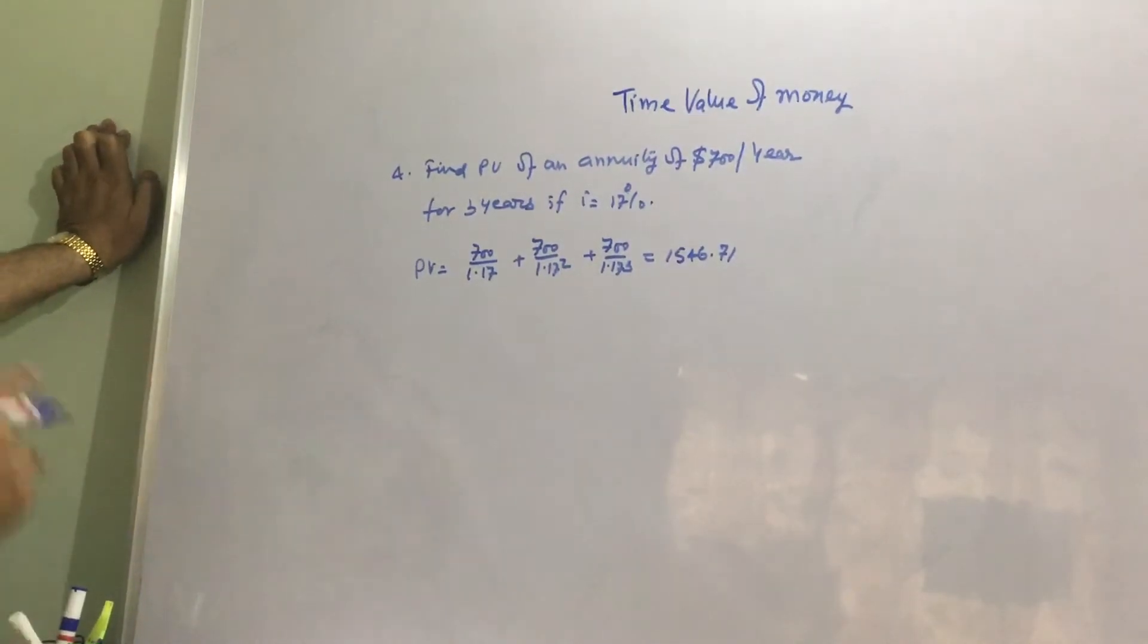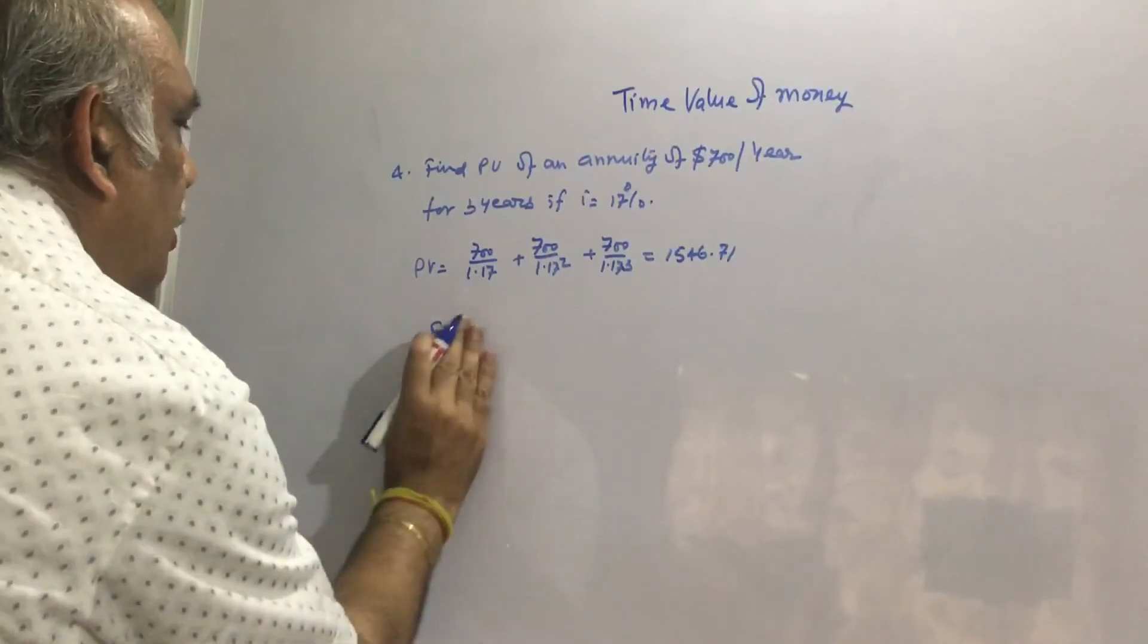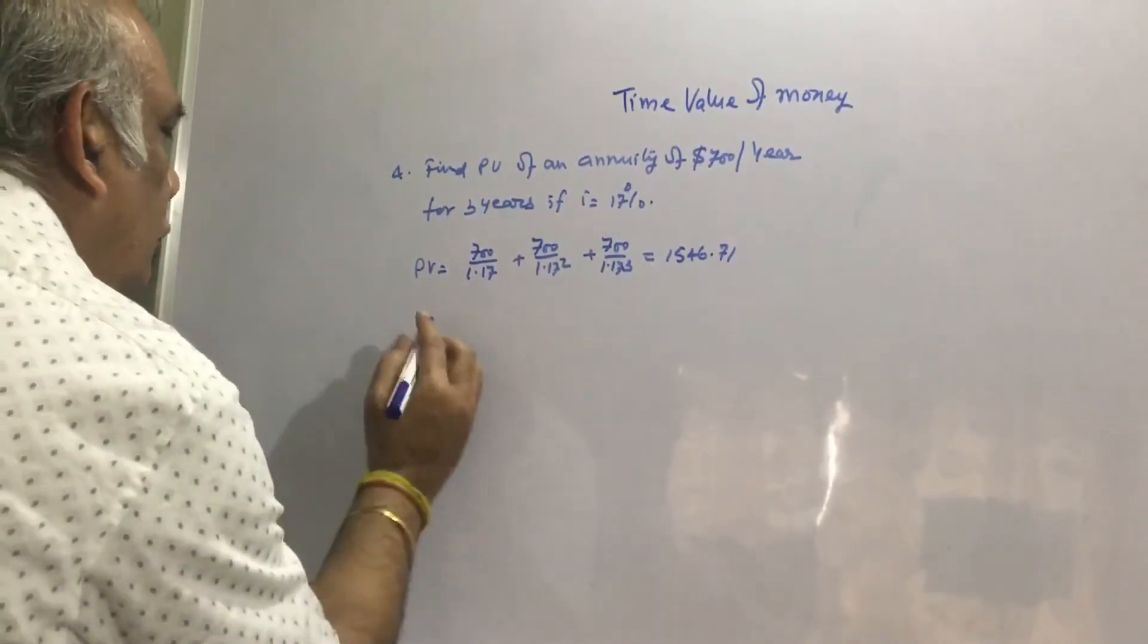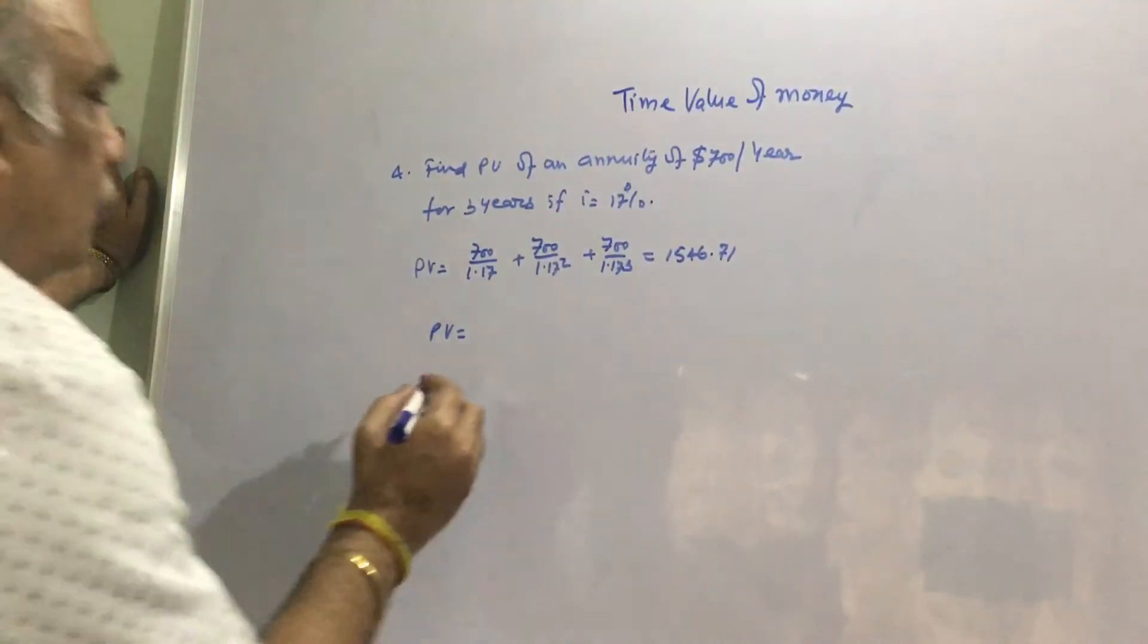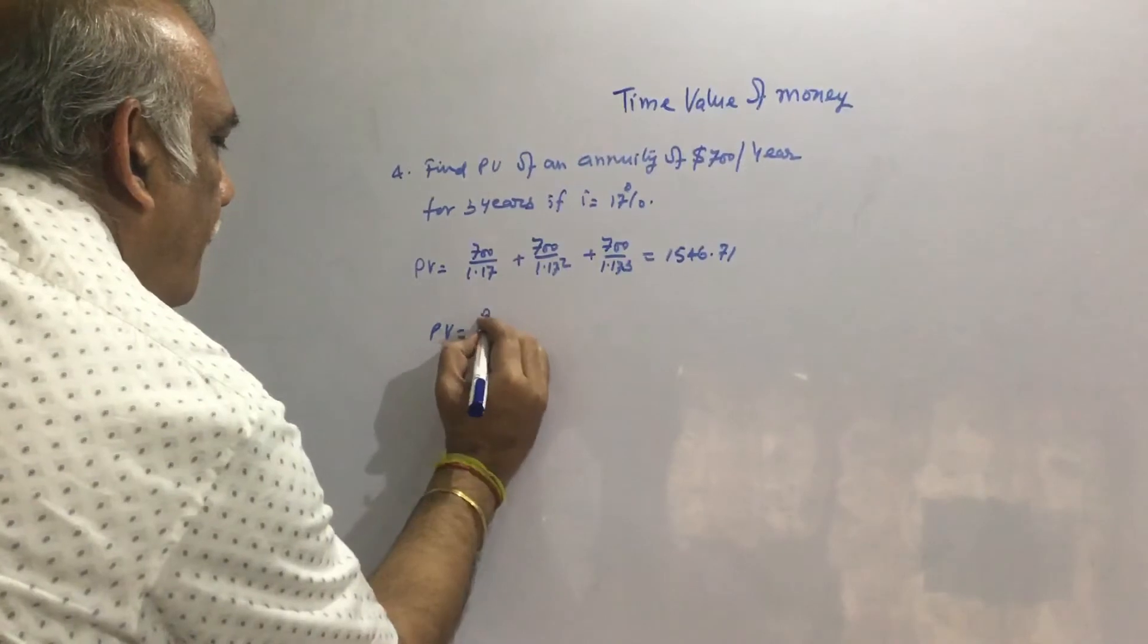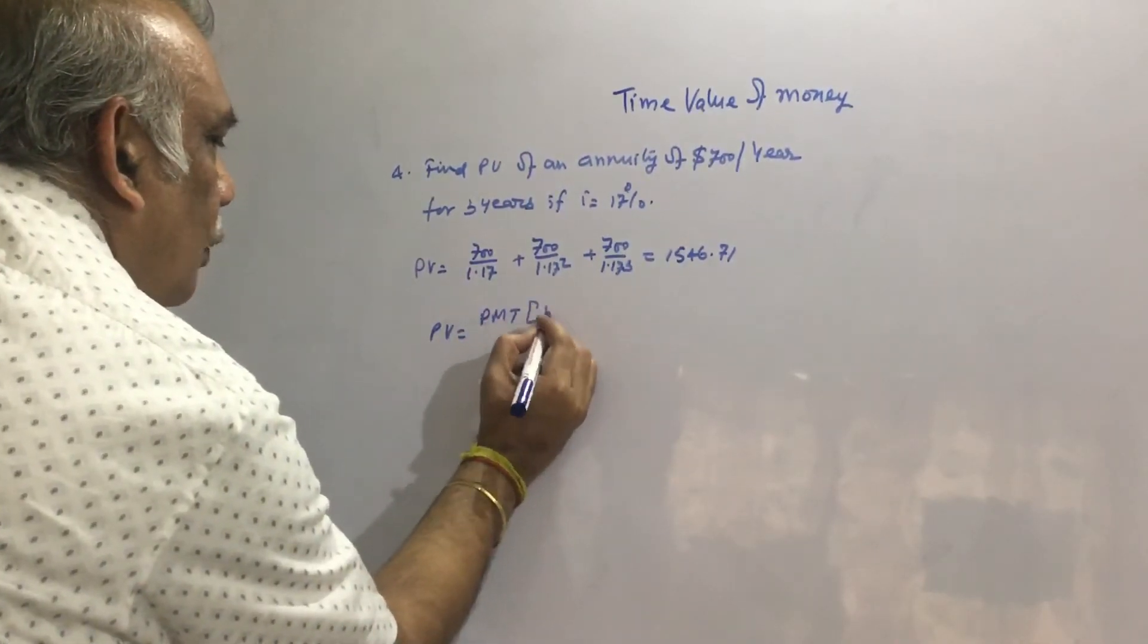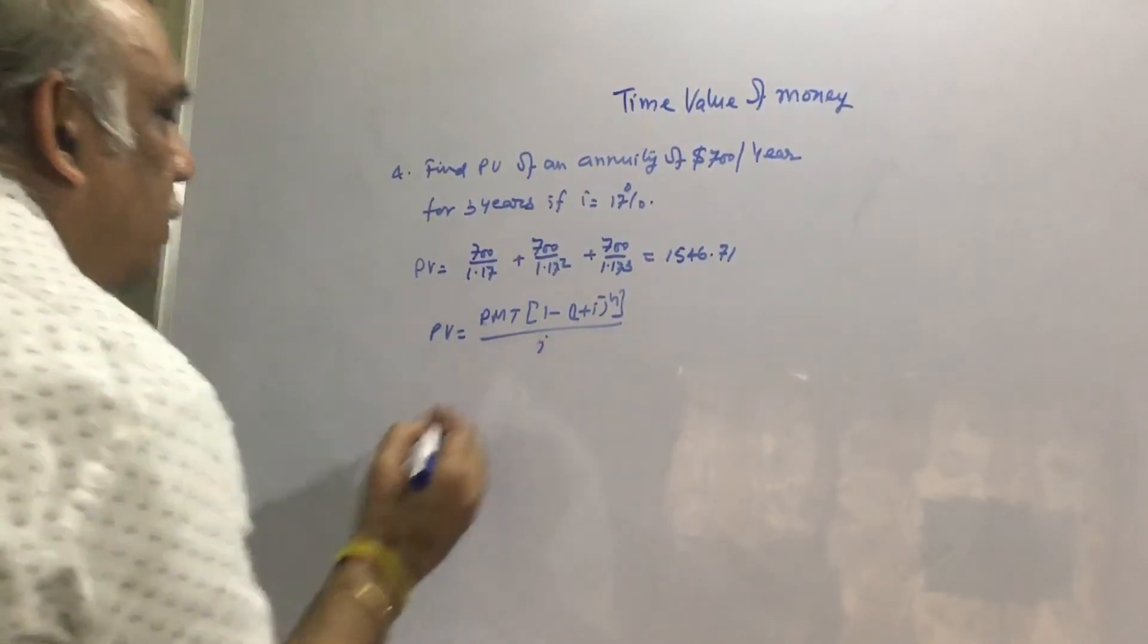See, this present value we can calculate using a formula. We are getting payments, we are not depositing, so we have to get the present value of the money. We have to use this formula: PV equals PMT times [1 minus (1 plus i) to the power negative n] divided by i.